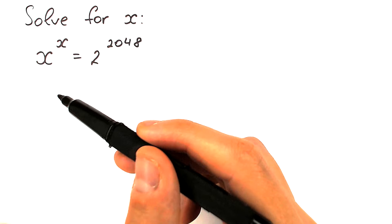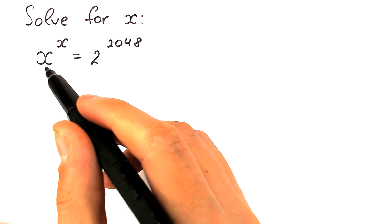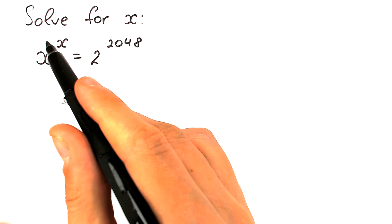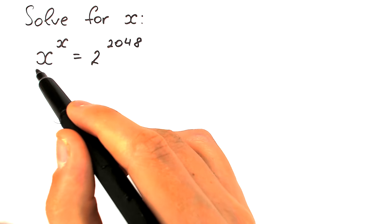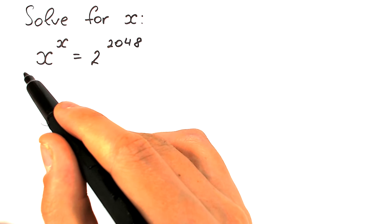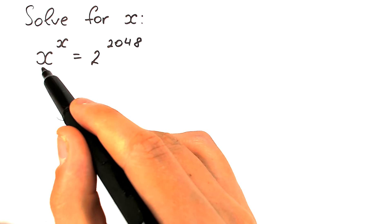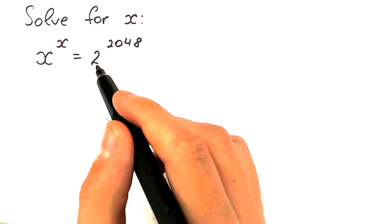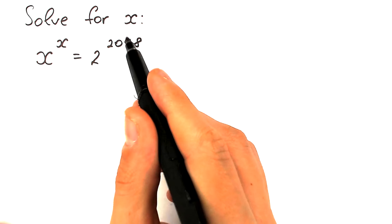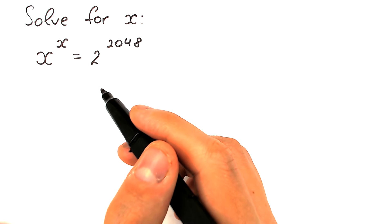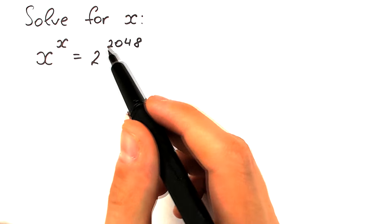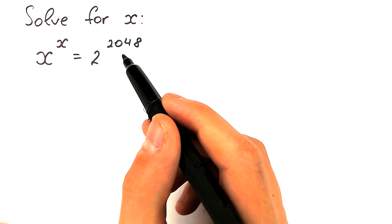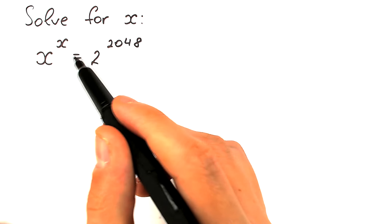So first of all, if we look closely at our challenge, we have x to the power x — same base and same exponent. This is a really important moment: on the left-hand side we have same base and same exponent, but on the right-hand side we have not the same base and not the same exponent — completely different values. So it will be really great to make the right-hand side also have the same base and same exponent, and then we can easily solve this question.